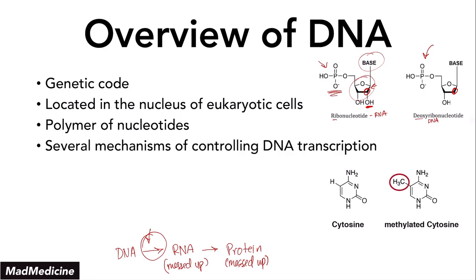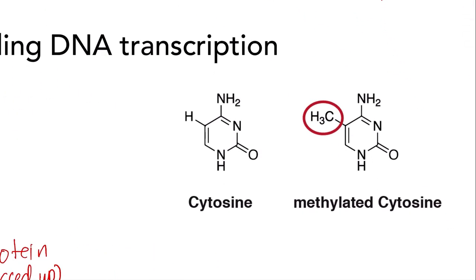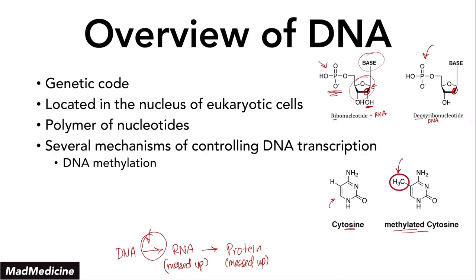And there are several mechanisms of controlling DNA transcription. One of these mechanisms we've already discussed, and that is DNA methylation. DNA methylation essentially means you can add a methyl group onto one of the nitrogenous bases. We have cytosine shown right here — this is the normal structure of cytosine. When you add a methyl group, you make it into methylated cytosine. DNA methylation, when you methylate these nitrogenous bases, will decrease DNA transcription. They are inversely related — an increase in methylation equals a decrease in transcription. Pretty straightforward, and we've discussed that already.